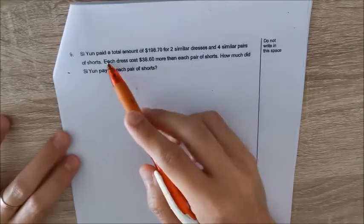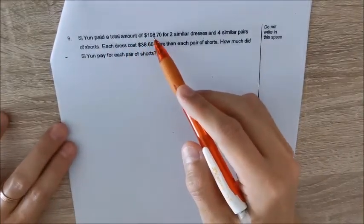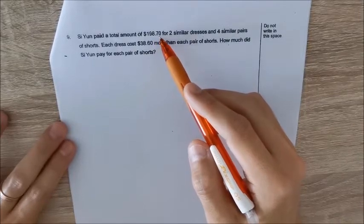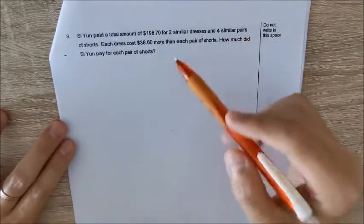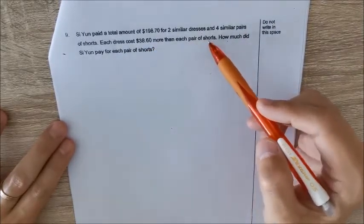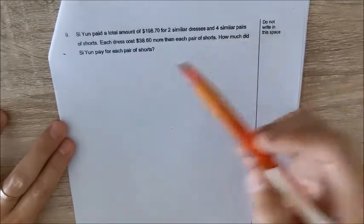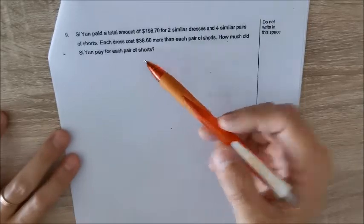Question 9: Si Yun paid a total amount of $198.70 for two similar dresses and four similar pairs of shorts. Each dress cost $38.60 more than each pair of shorts. How much did Si Yun pay for each pair of shorts?